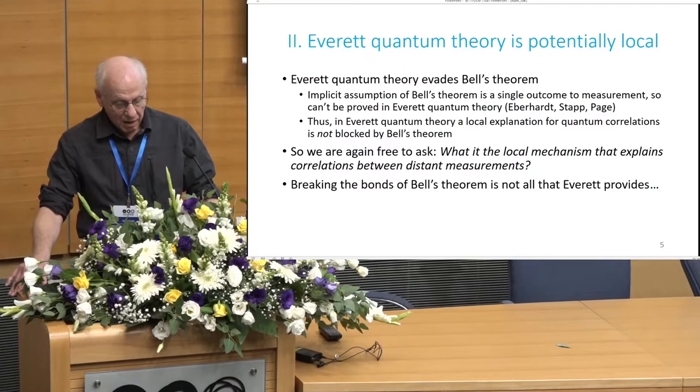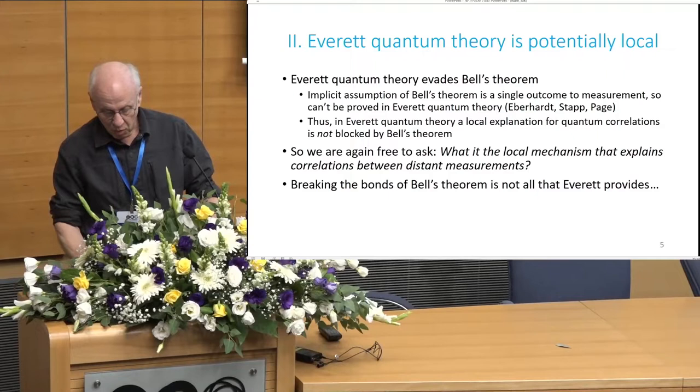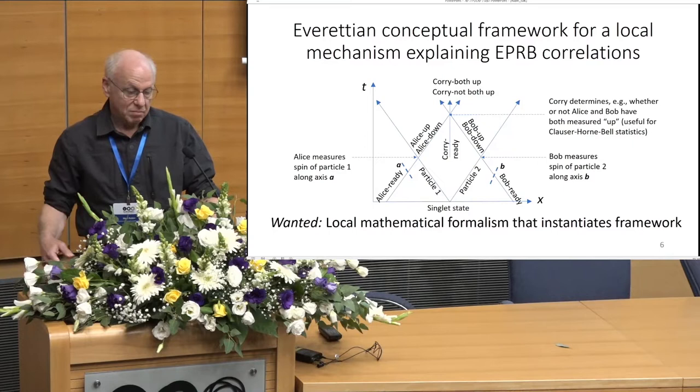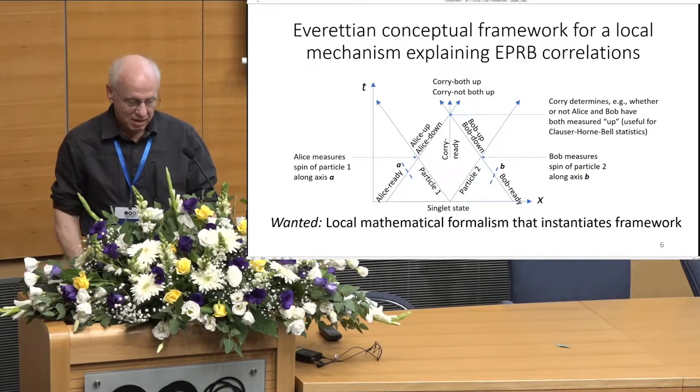Except that Everett doesn't allow us to derive Bell's theorem, because an implicit assumption in deriving that theorem is that there is a single outcome to each measurement. And so, this theorem can't be proved in the context of Everett quantum theory. So we've removed this obstacle to having a local explanation for EPRB and similar types of correlations. But now the question is, does one exist, and if so, what is it? Everett does more than simply remove the issue of Bell's theorem as a problem for locality. The Everett theory provides a local framework for explaining these kinds of correlations.